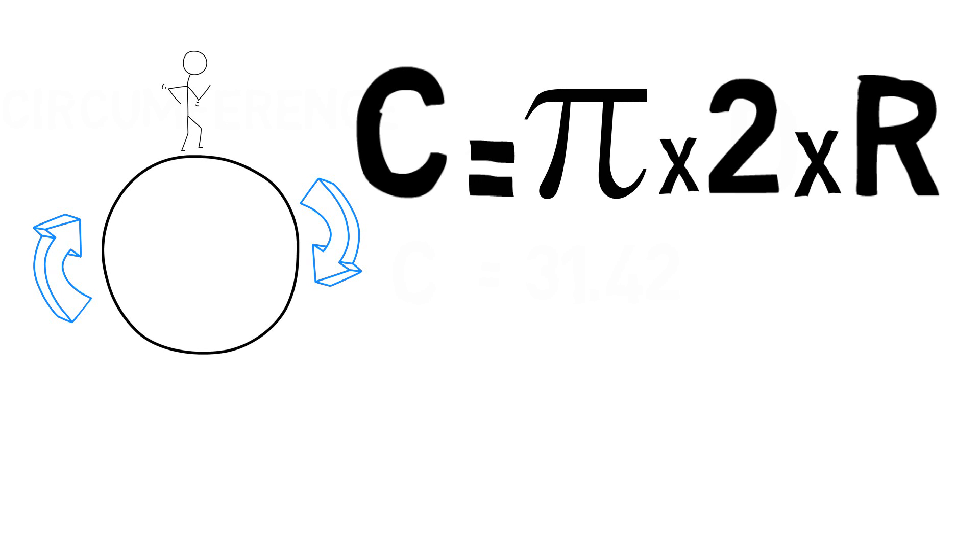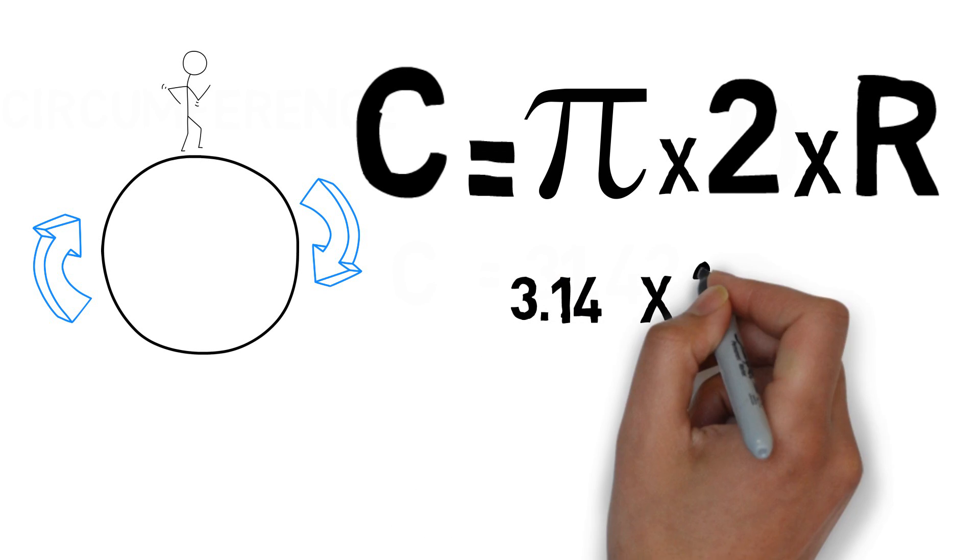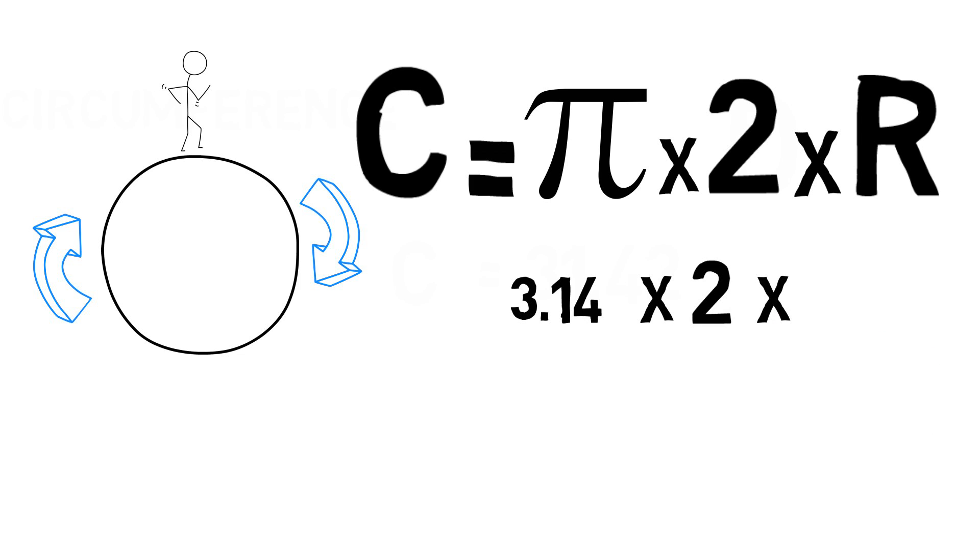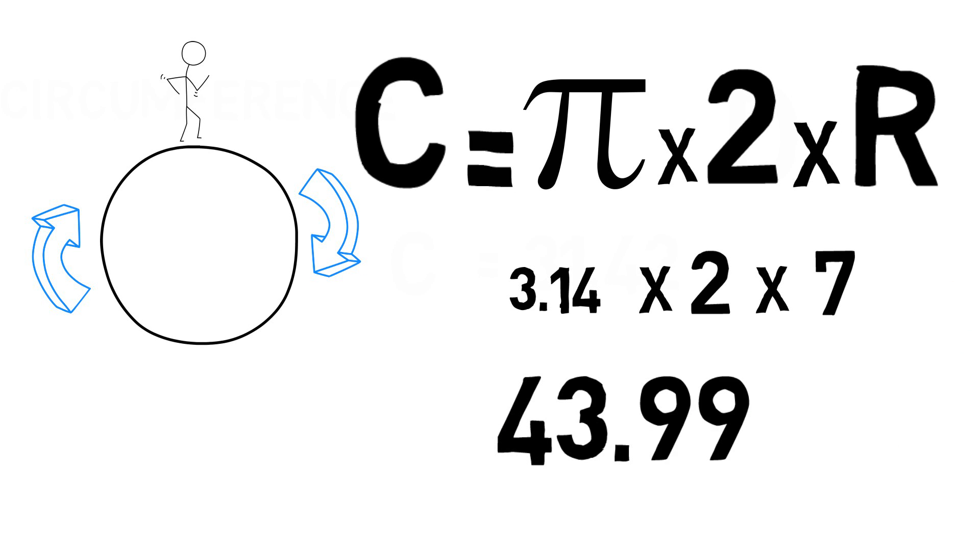So the circumference of a circle with radius 7 is 2 into 3.14 into 7. And here is our answer.